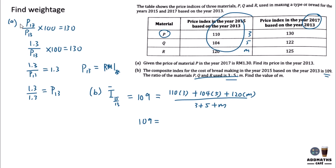So 109 equals 330 plus 520 plus 120M over 8 plus M. So bring this over here.